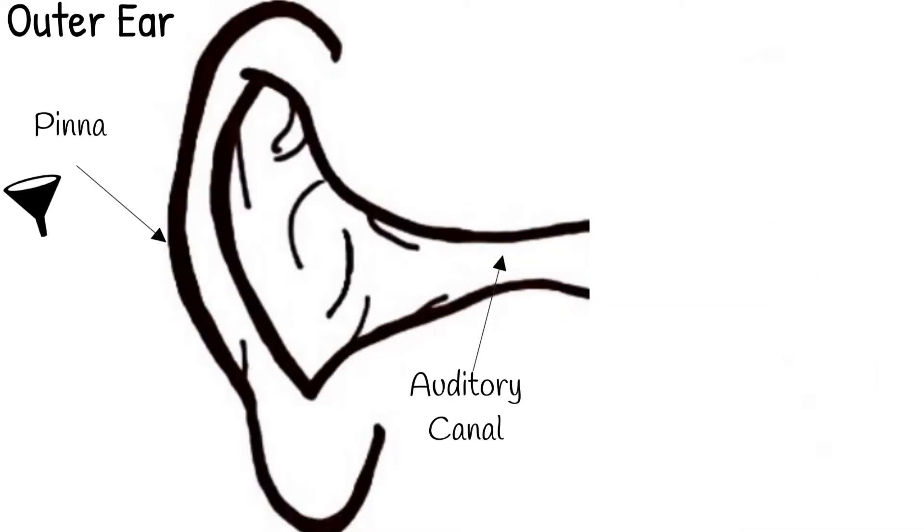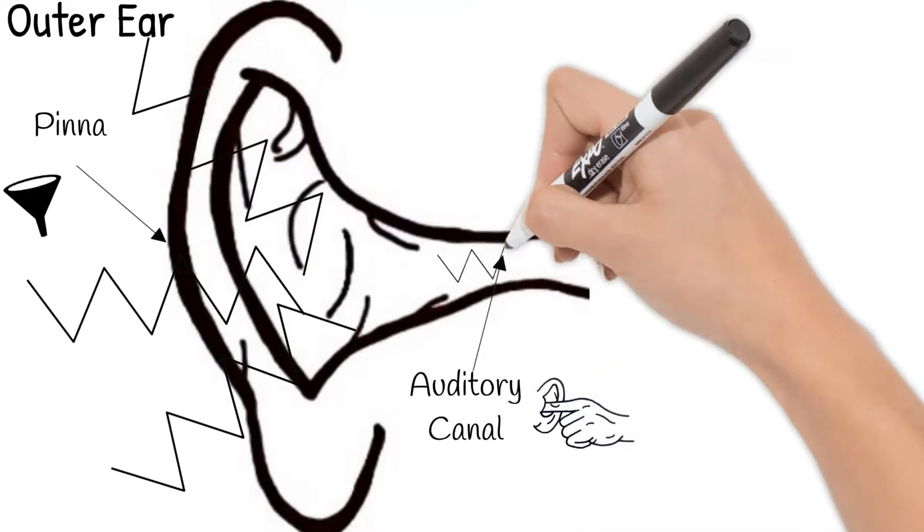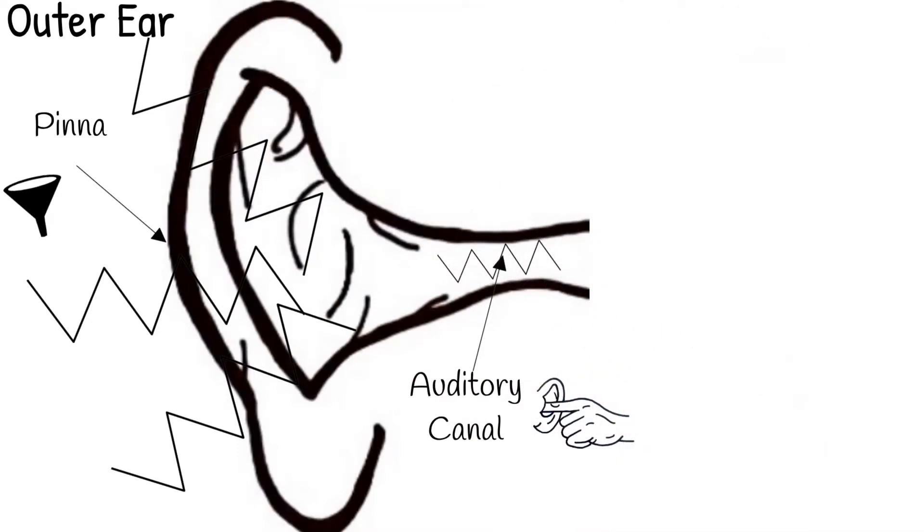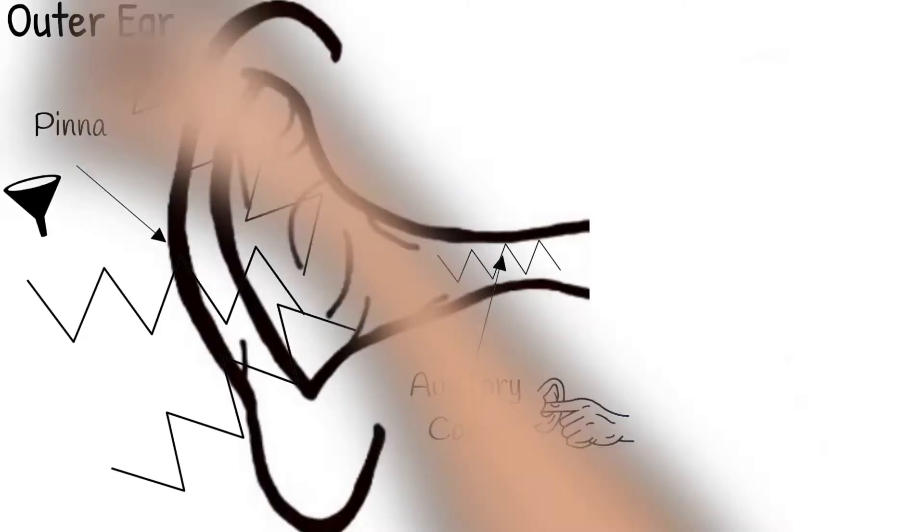Your auditory canal is the hole of your ear. It's where you try to stick your finger to scratch an itch. The auditory canal takes the sound waves the pinna has funneled towards it and it channels them towards the middle ear. Both the pinna and auditory canal then help with the ear's job of hearing.